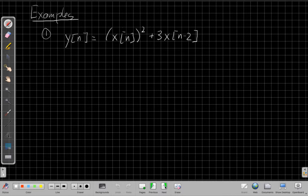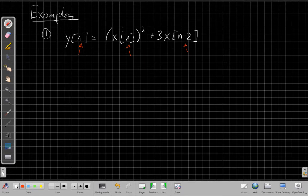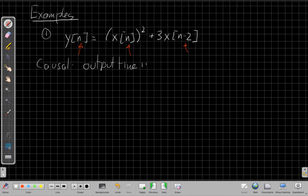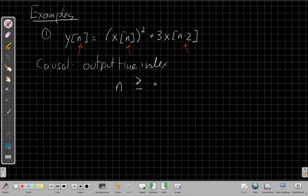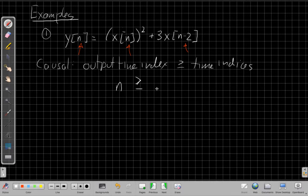Here's an example. The output y of n is equal to x squared of n, x of n squared, plus 3x of n minus 2. What we're looking at is the output time index here. Then we look at the inputs. So the inputs are coming from x of n and n minus 2. If it's causal, to be causal, we need that the output time index, which here is n, has to be always greater than or equal to the input time index or indices, all of them, if there's more than one term.